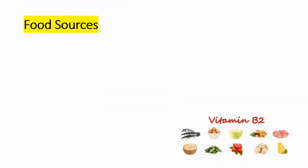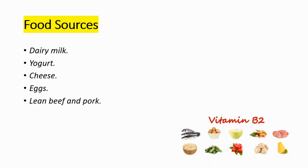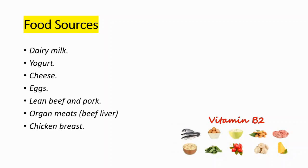After talking about the problems, now we can talk about food sources. You can get vitamin B2 from dairy — milk, yogurt, cheese — as well as eggs, lean beef and pork, organ meats such as beef liver, chicken breast, and salmon.